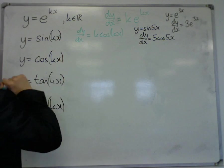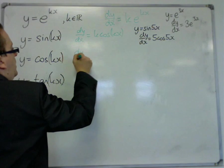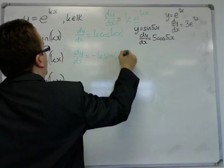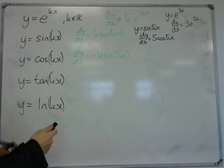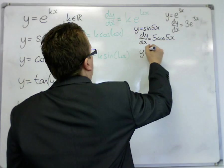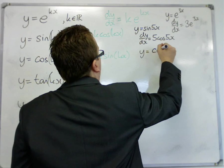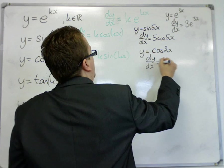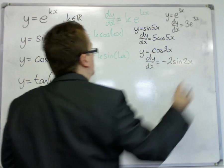y equals cos of kx, dy by dx will be minus k sine of kx. So if I had y equals cos of 2x, then dy by dx is minus 2 sine of 2x.